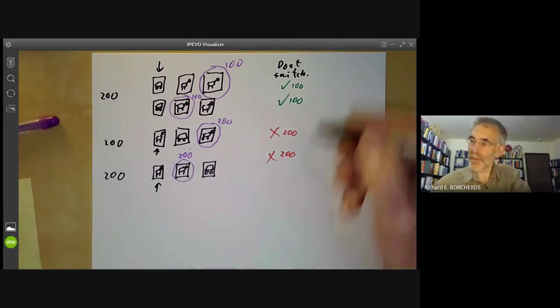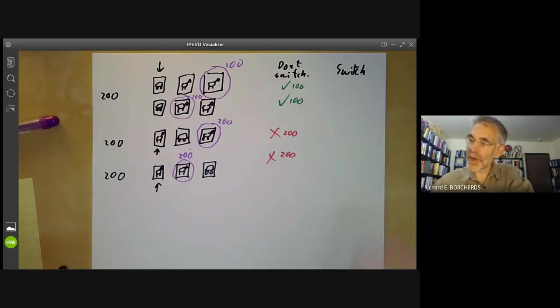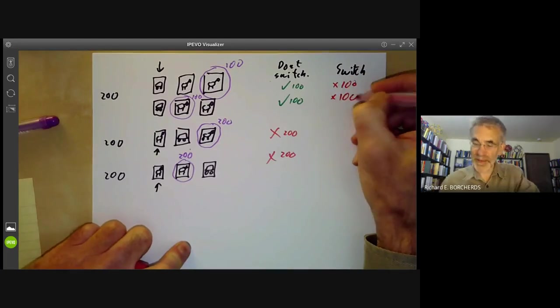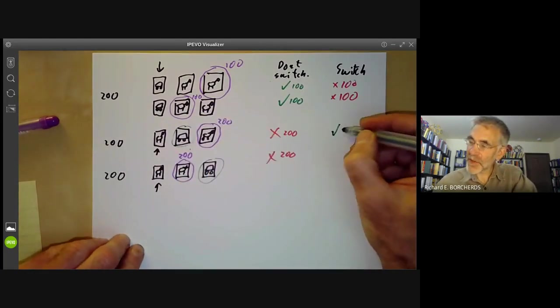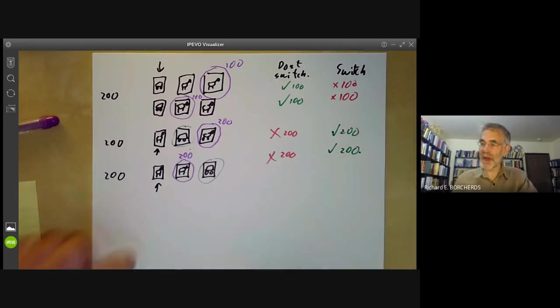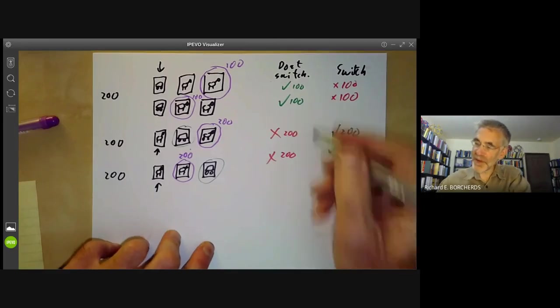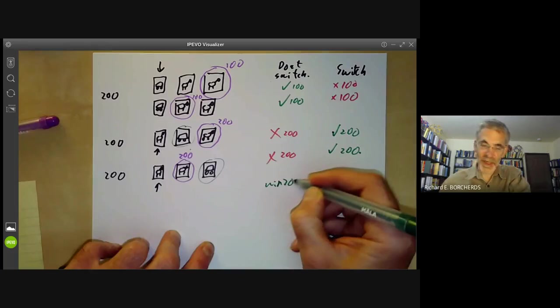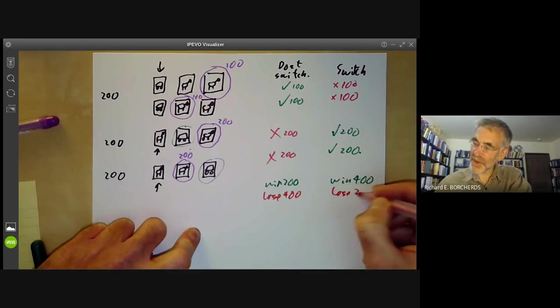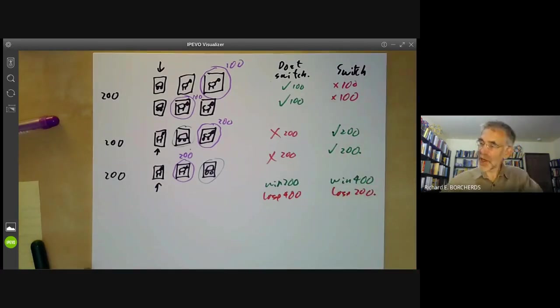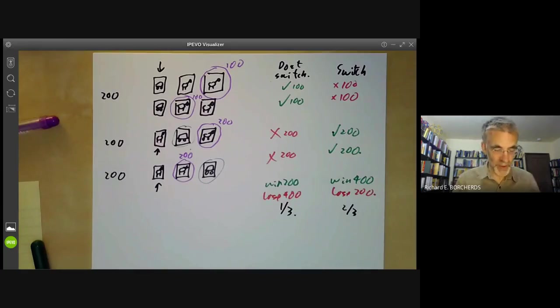If you switch, then we lose 100 times here. We lose 100 times here. But you can see if we switch, we would be getting this door. So we win 200 times here and we win 200 times here. So you can now add it up. If we switch, we win 400 times. And if we don't switch, we win 200 times and lose 400 times. And here we lose 200 times. So you can see switching is clearly better. If you switch, you have a two thirds probability of winning. And if you don't switch, you have a one third probability of winning.